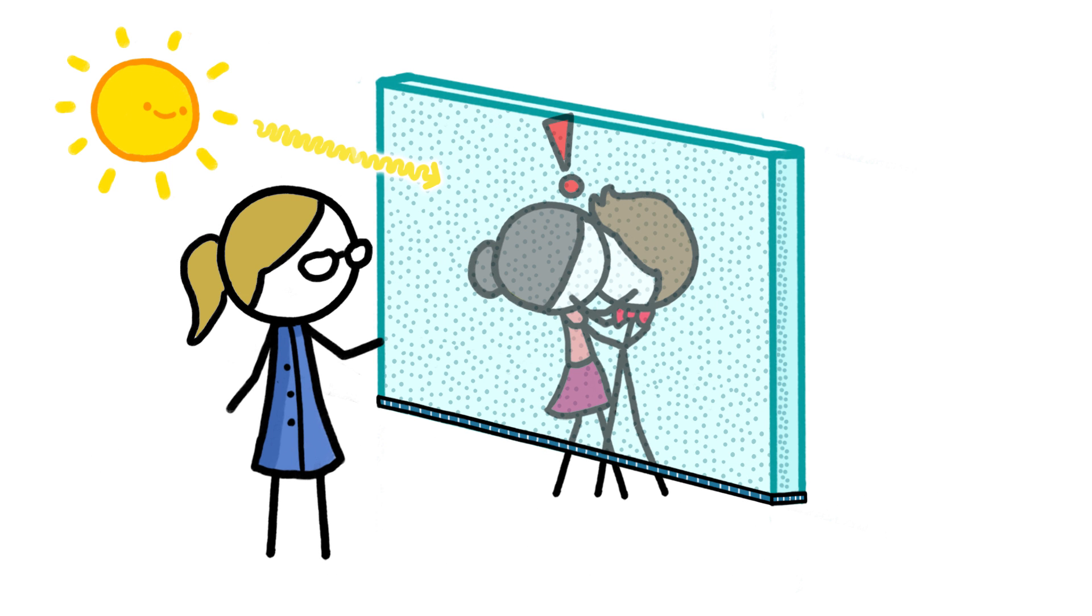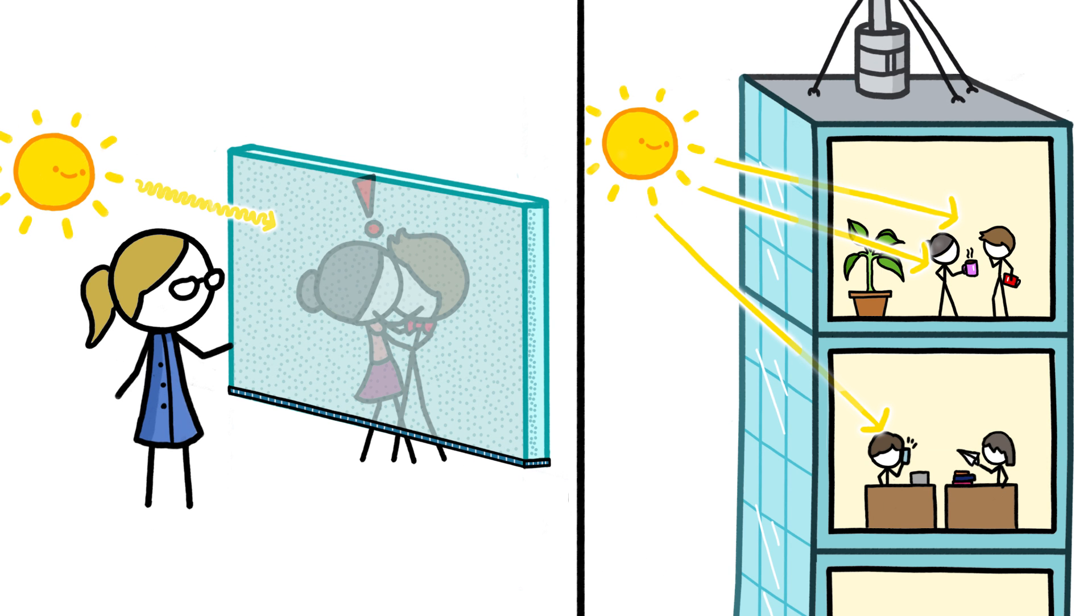Because these solar windows capture some light, they're not 100% transparent. But actually, neither are normal skyscraper windows. They're usually coated with reflective material to keep some of the sun's energy out.